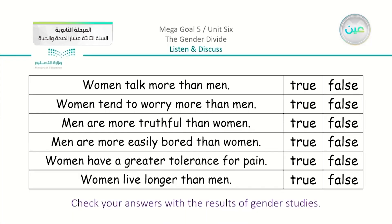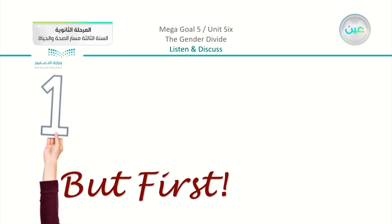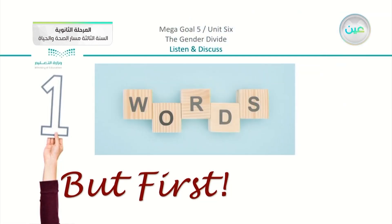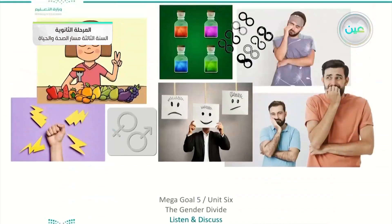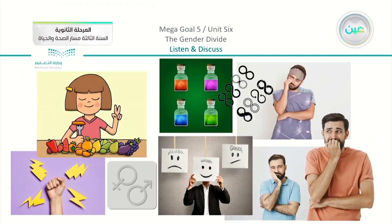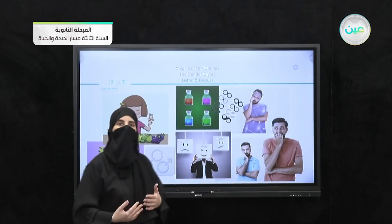Moving on with our lesson, before we start with the discussion in the book, we are going to look at the vocabulary words on page number 83: anxiety, gender, repetitive, stereotype, temperament, capacity, intensity, restless, and tedious. We also have different pictures to look at — a person who looks sleepy, then worried, then bored, along with various symbols and images.